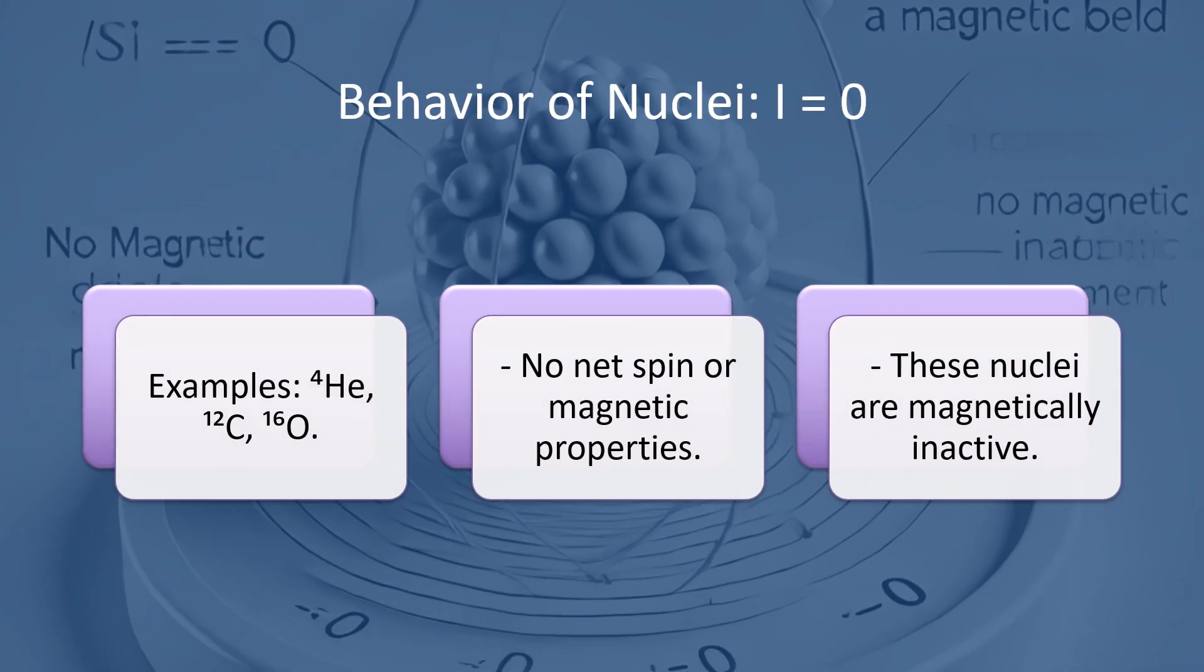Finally, some nuclei, like carbon-12, have a spin quantum number of zero. This means they don't have a magnetic moment and don't interact with magnetic fields in the same way. Such nuclei are 'silent' in techniques like NMR, but still play an important role in chemistry and physics.